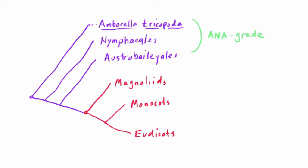This will give you a little review of our earlier lesson when we talked about the group consisting of the Amborella, the Nymphaeales — the water lilies — and the Austrobaileyales as an ANA grade. That earlier discussion didn't really explain what the grade term meant, so now I want you to understand why these basal taxa are a grade rather than a clade.